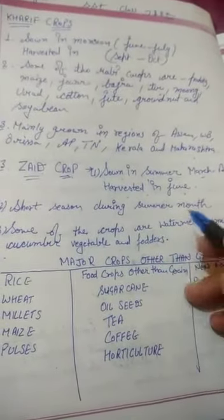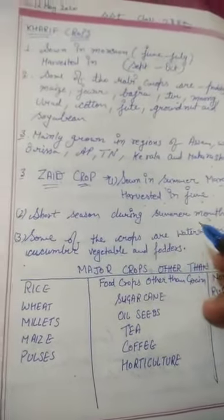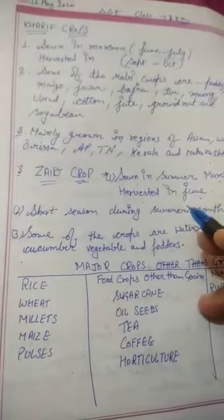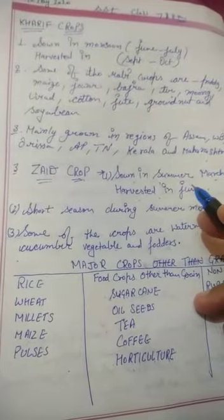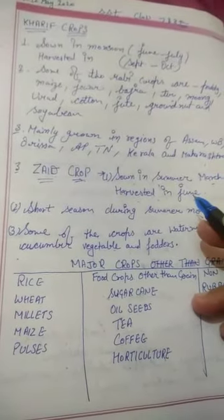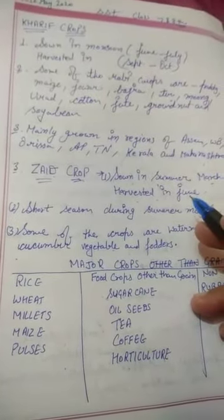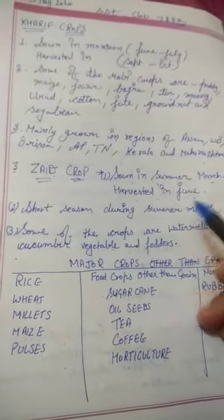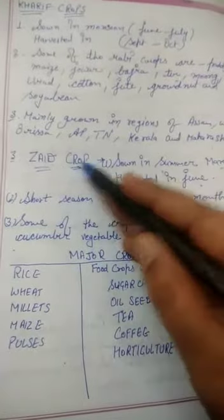So, there are three types of main crops grown in India: Rabi crops, Kharif crops, and Zaid crops.